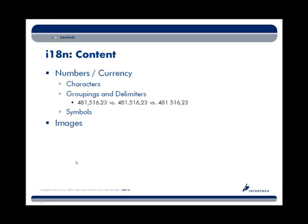In addition to text, you'll want to pull out numbers and currencies. Sometimes the characters representing numbers can be different; other times it's just the groupings and delimiters. For example, in the US we represent a number as 481,000.23 — whereas another region may invert that, using a decimal point where we use a comma, and a comma where we use a decimal point. Other regions may omit the grouping comma altogether and use a space instead. So groupings, delimiters, percentage symbols, and currency symbols all vary.